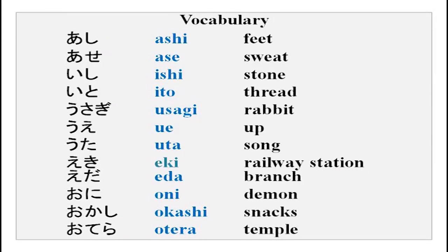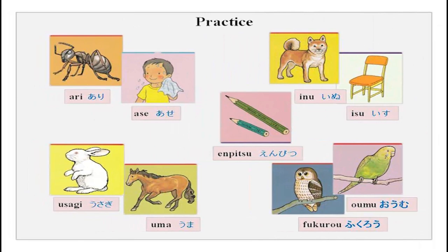There is more — you can repeat after me: ashi, ase, ishi, ito, usagi, ue, uta, eki, eda, oni, okashi, otera. All the meanings are given clearly — you can learn these.